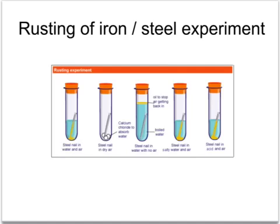This picture shows the classic experiment to illustrate the causes of rusting. On the left, we have what we call the control experiment. This contains the factors we'd expect to cause rusting — in other words, the iron or steel nail here is in contact with both water and air.